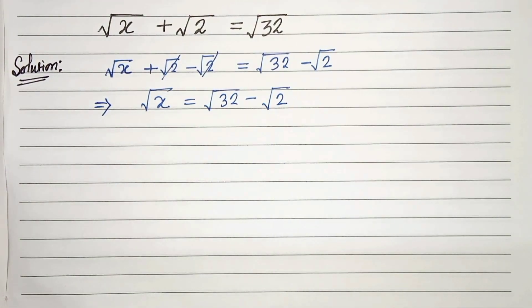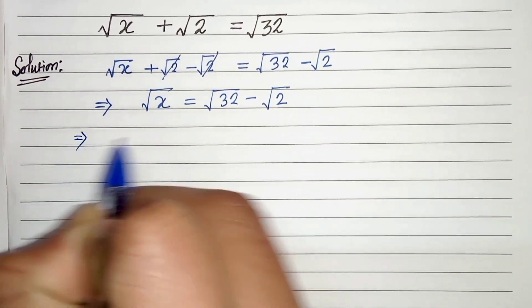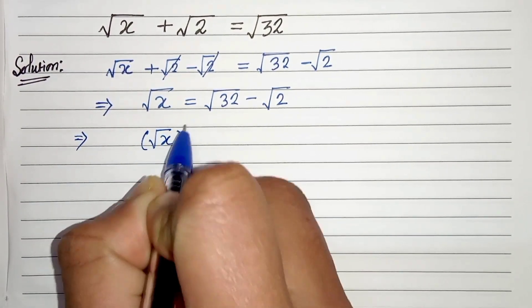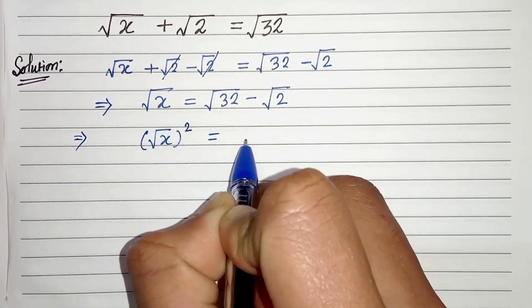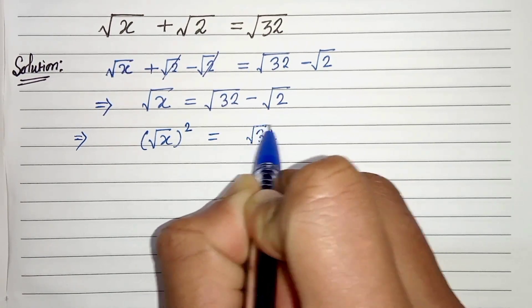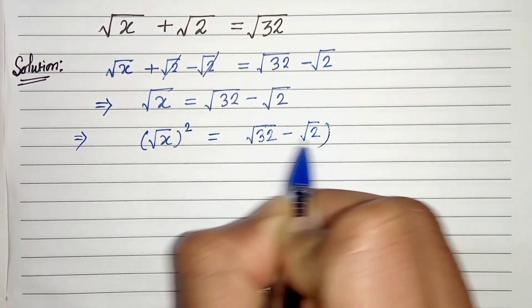In the next step we will square both sides. So (√x)² equals (√32 - √2)².